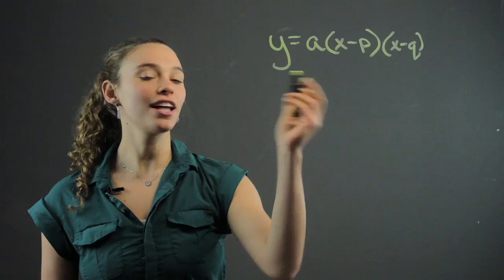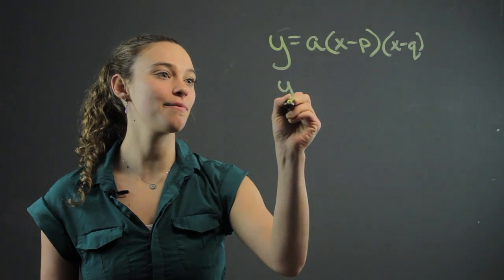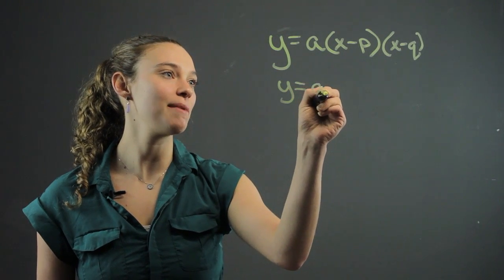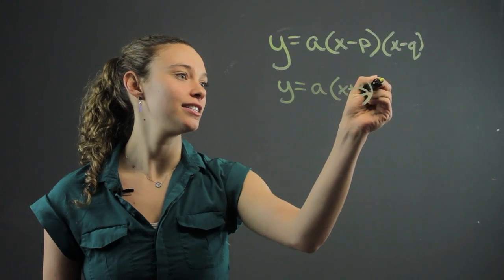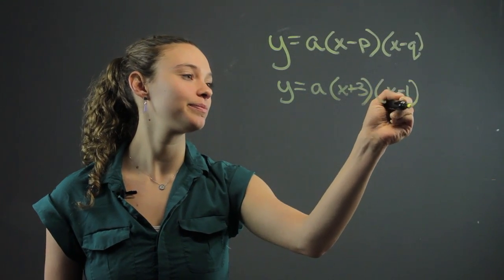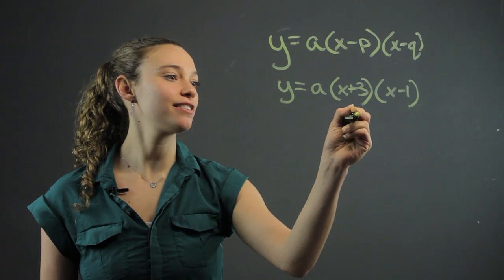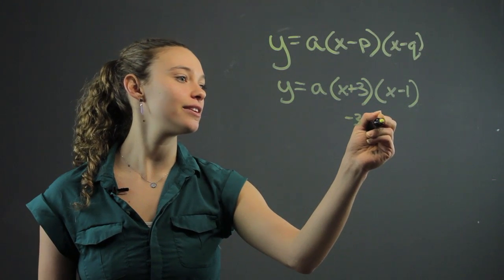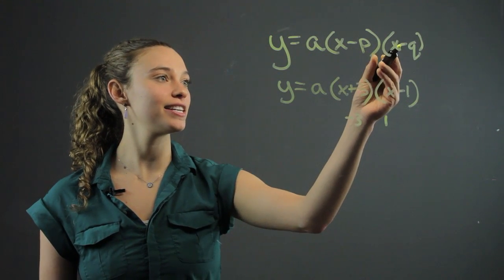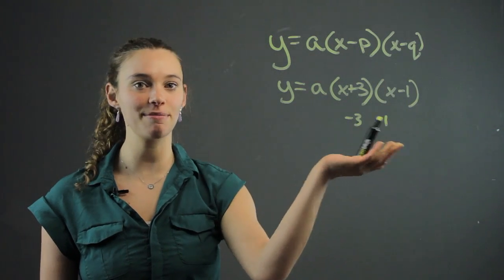And so let's look at an example. Let's say we have y equals a times x plus 3 times x minus 1. Well, in this case, p is going to be negative 3, and q is going to be 1, because it's minus 1, so it's going to be 1.